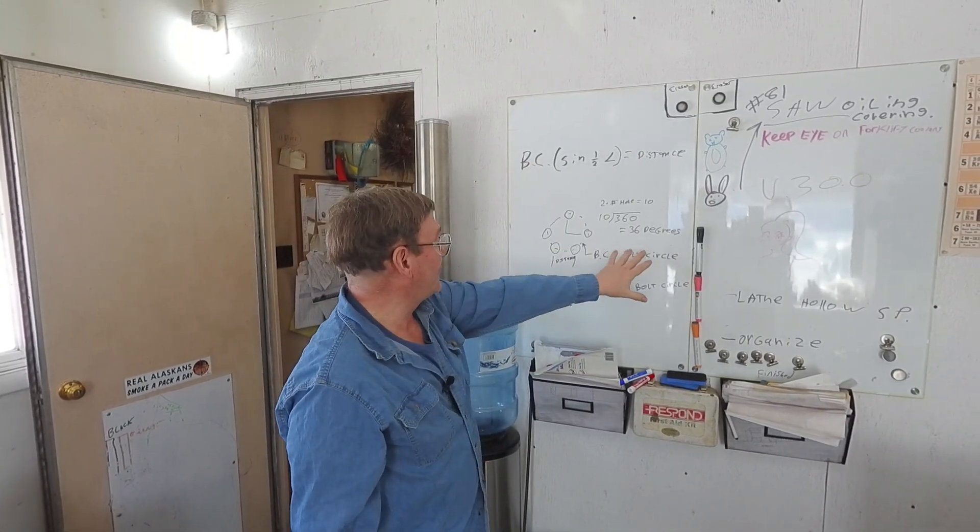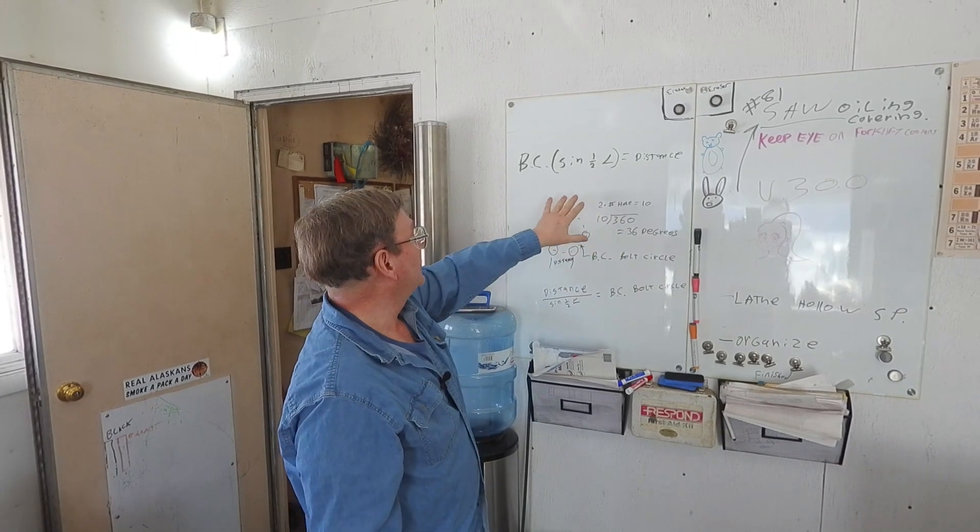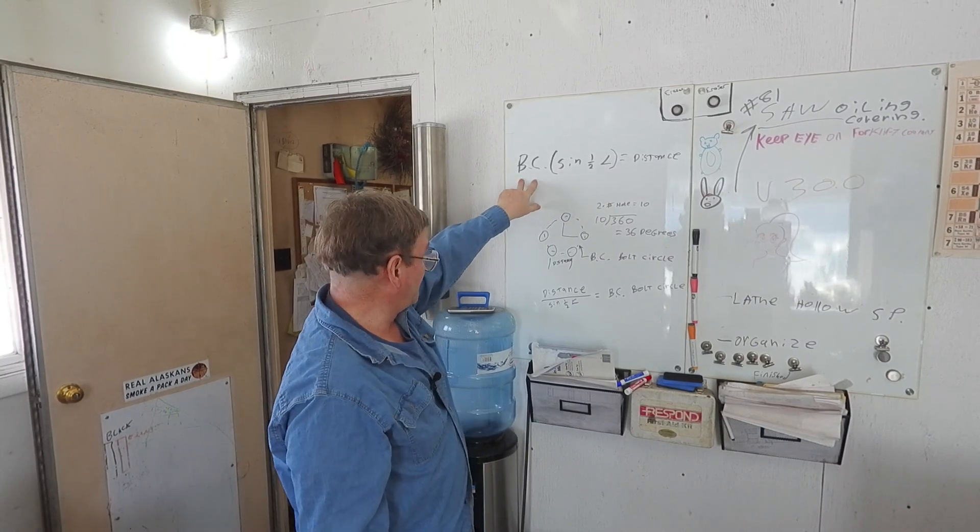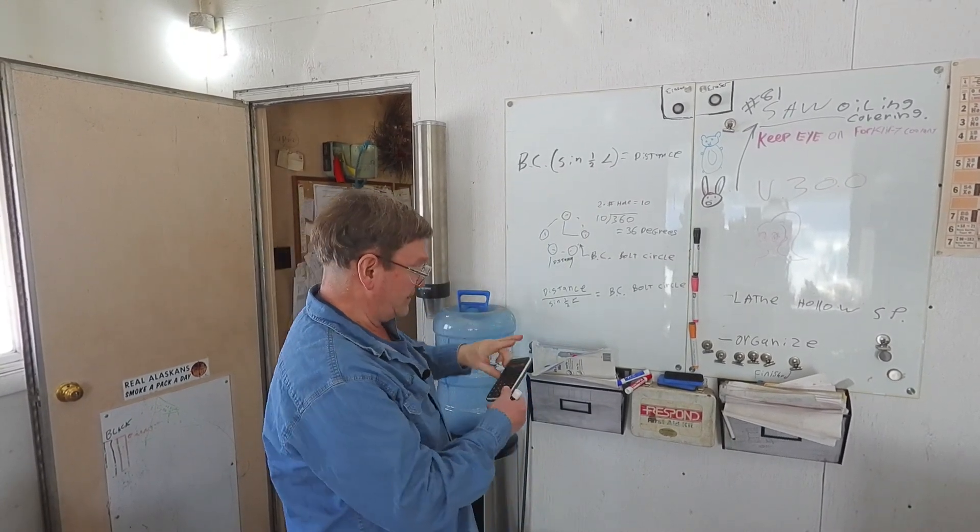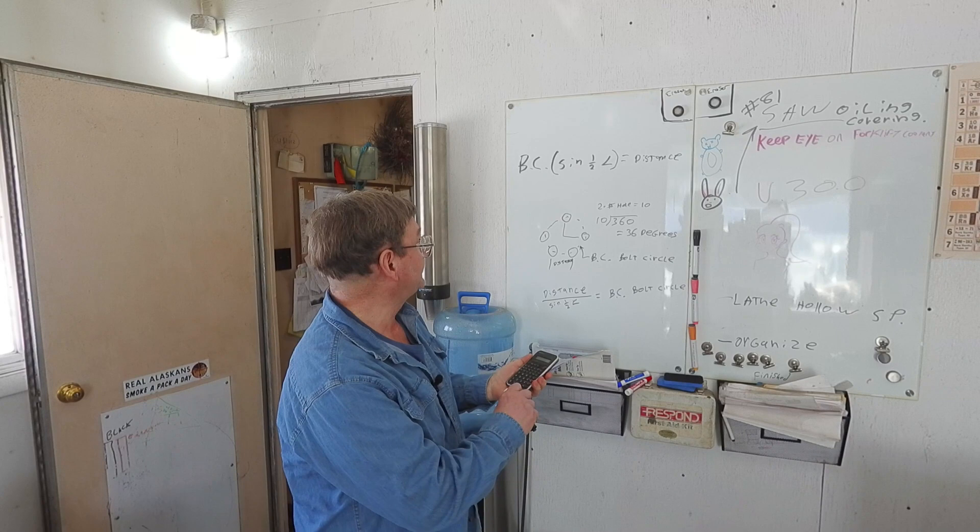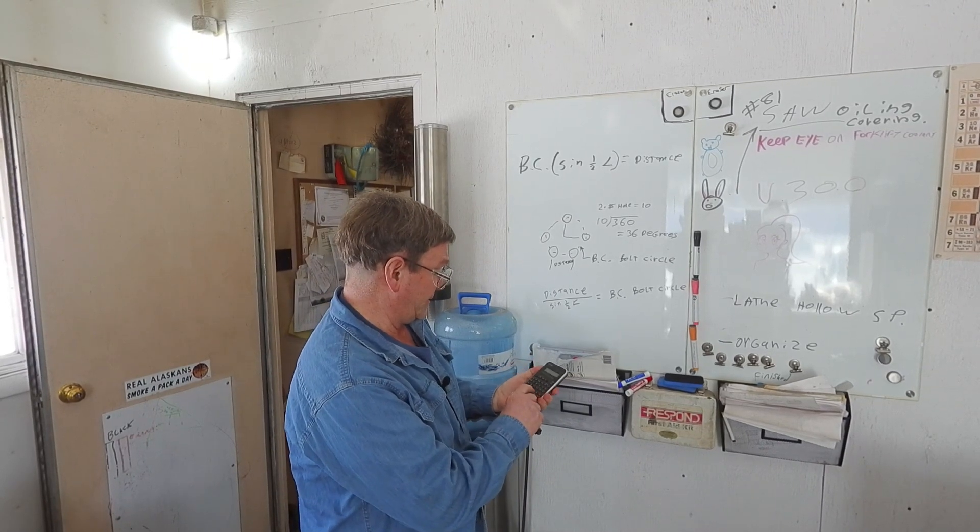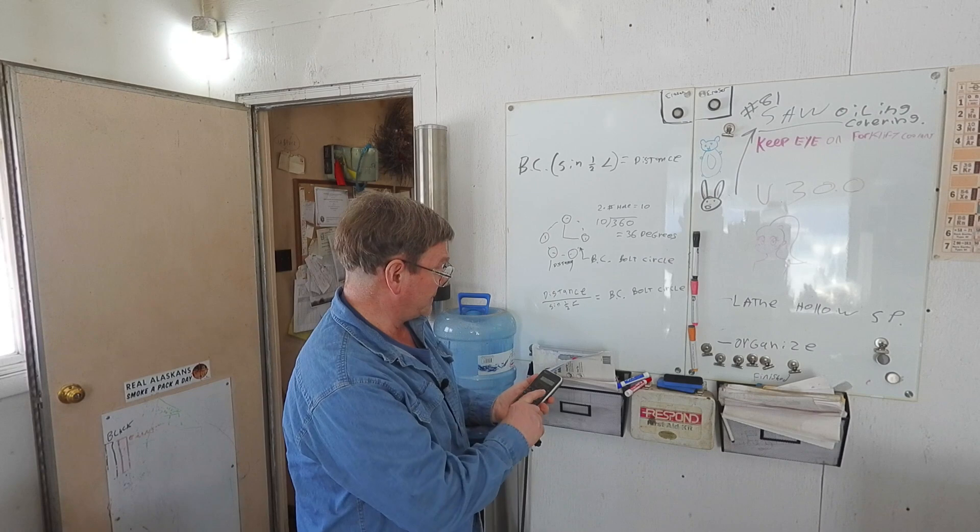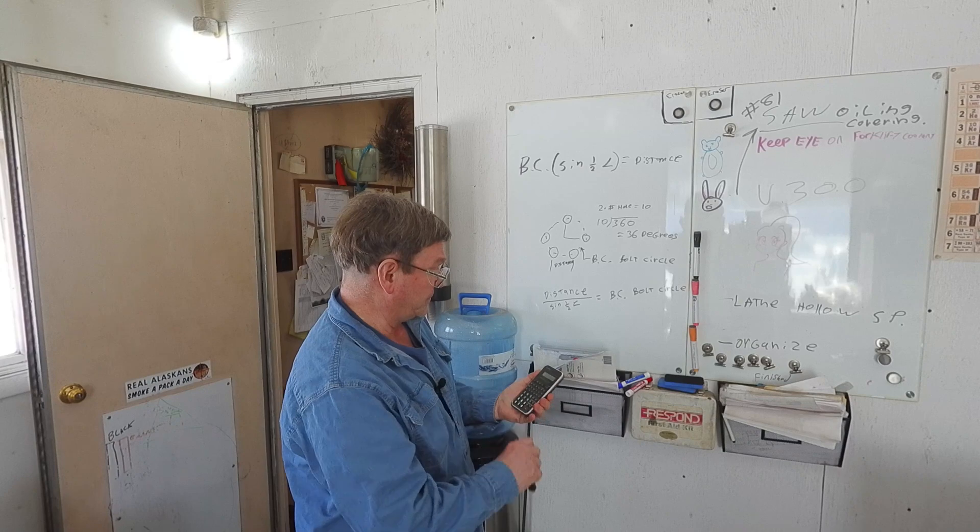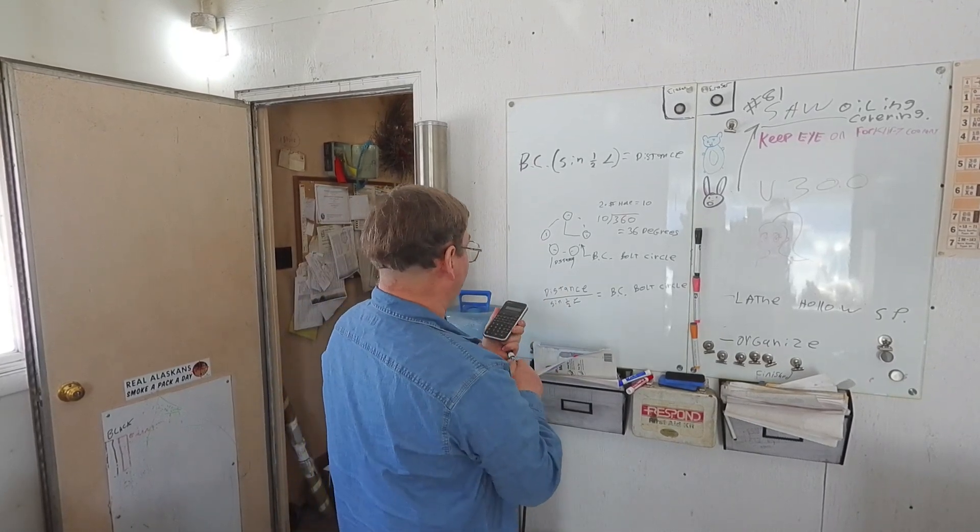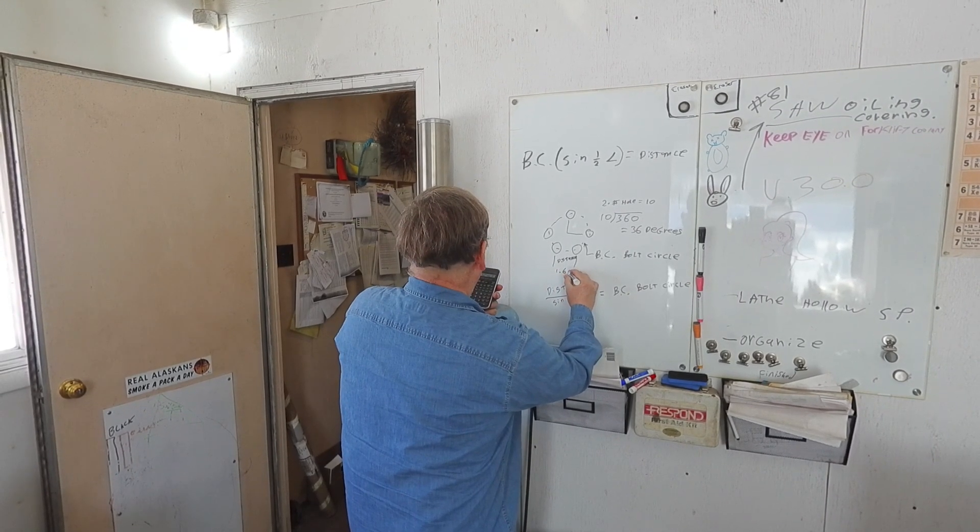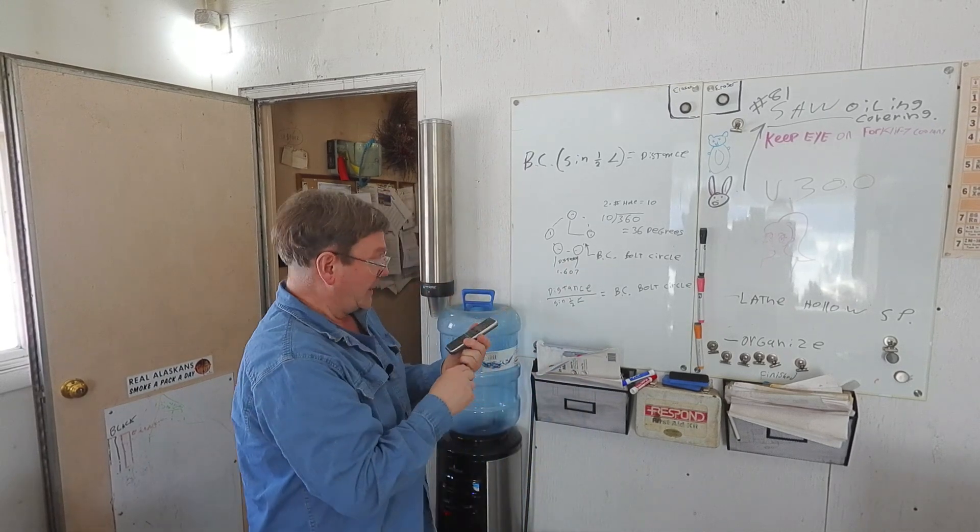So now that we have our 36 degrees, we can take our sine of that 36 degrees, multiply it by whatever your bolt circle is. In this case, while we're going through this, let's say that our bolt circle is three inches. So if we have 36, we push sine, and then we go times the three inch bolt circle. That means that our distance we'd have in that case is going to be 1.607 approximately.